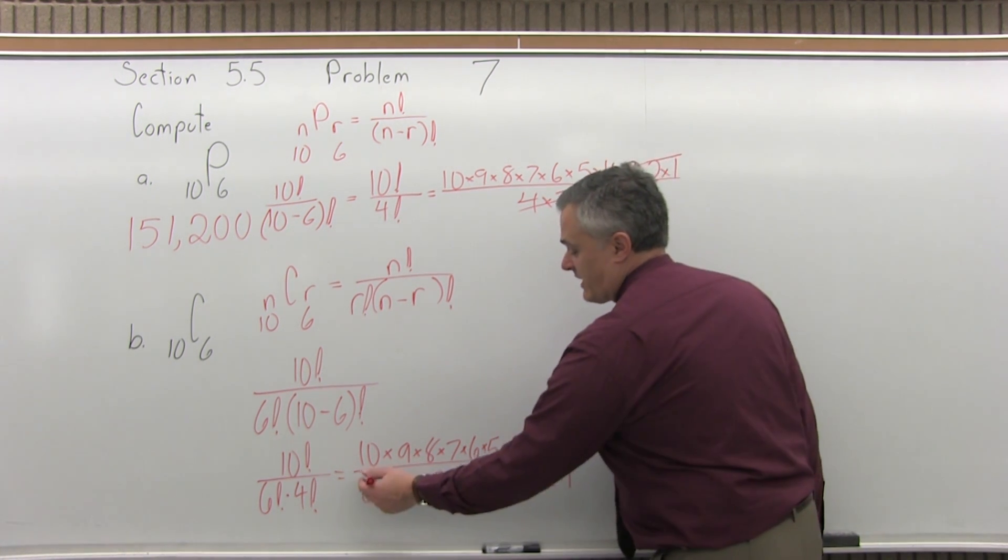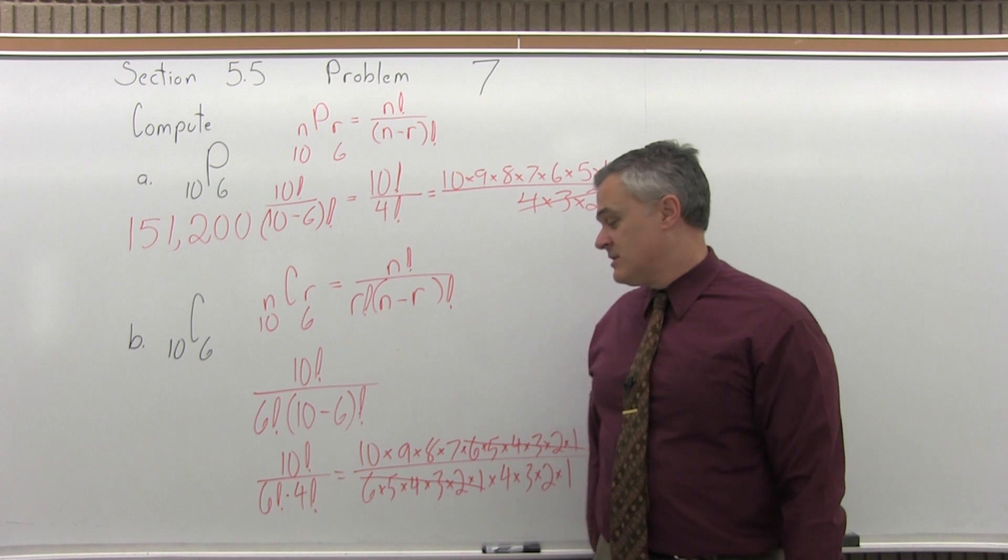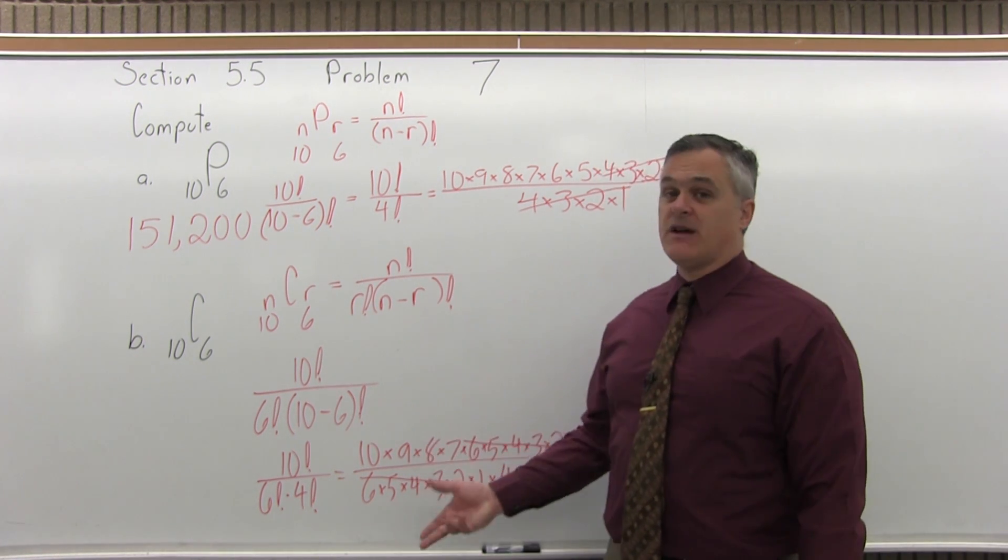Let's at least do 6, 5, 4, 3, 2, 1 on the top, 6, 5, 4, 3, 2, 1 on the bottom. Cancel those. Now you can multiply what's left and reduce it.